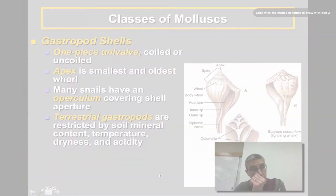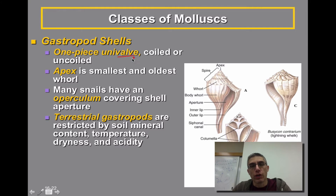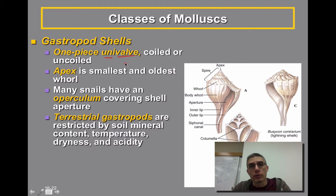What's really interesting about the gastropods is their shells. Most of them will have what we consider a one-piece univalve. The word 'valve' refers to the shell of the animal, and if you put the prefix 'uni' in front of it, we're talking about a one-shelled animal. This shell does tend to be coiled, or it could even be uncoiled, depending on the species.